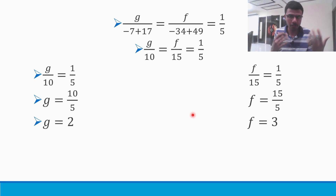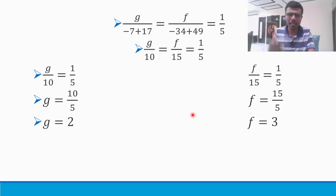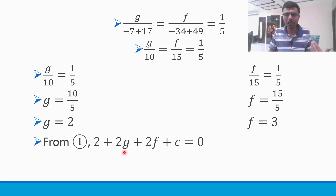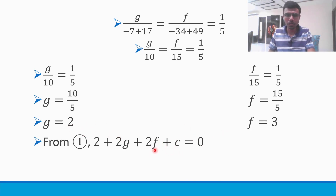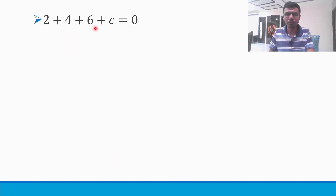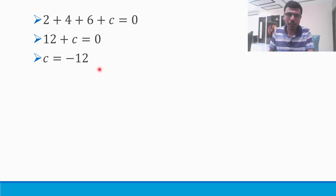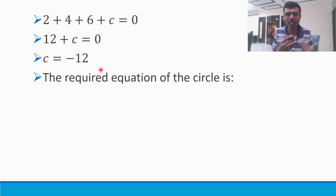I got g = 2 and f = 3. Now I need to find c. Taking the first equation: 2 + 2g + 2f + c = 0. Substituting g = 2 and f = 3: 2 + 4 + 6 + c = 0, so 12 + c = 0, giving c = -12.